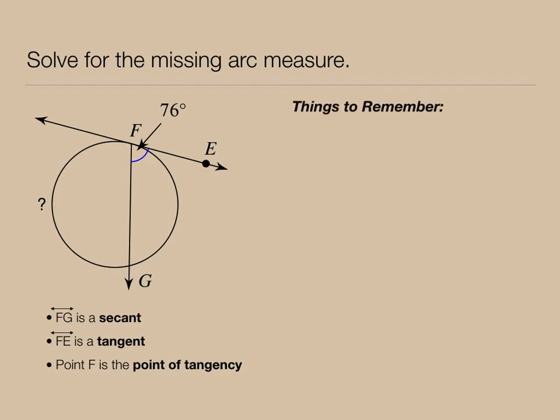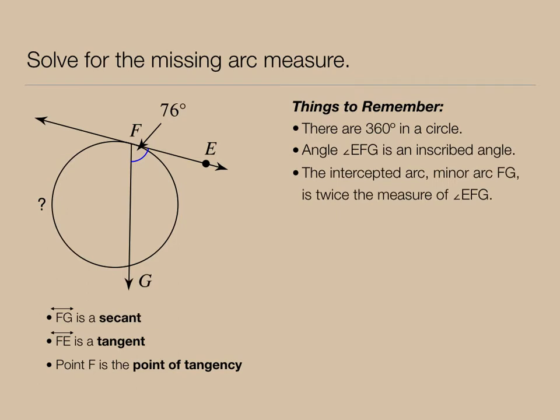We also know that there's 360 degrees in a circle, that we can classify angle EFG as an inscribed angle, and the arc that it intercepts, which is minor arc FG, is twice its measure. The inscribed angle is given as 76 degrees, therefore minor arc FG must be 152 degrees. I can now label my diagram as 152 degrees there. So the missing arc measure is 360 minus 152, or 208 degrees.